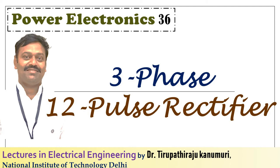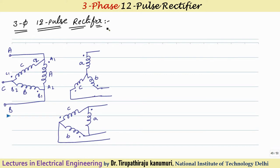Today we are going to discuss the three-phase 12-pulse rectifier. In this case, for each cycle, 12 pulses of the output are produced, that is why it is called the 12-pulse rectifier.